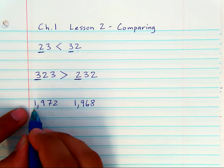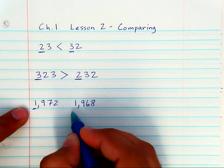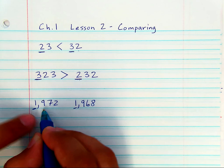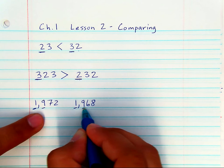you start with the thousands by comparing them. They are equal. Then, you go to the hundreds and compare them. Well, they are equal.